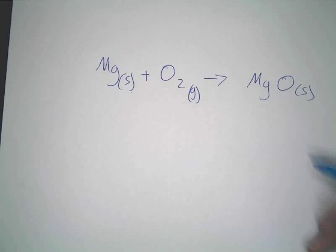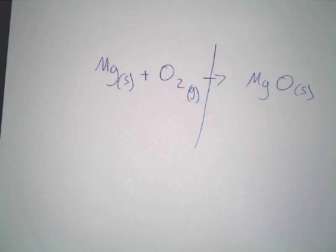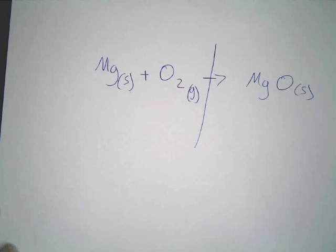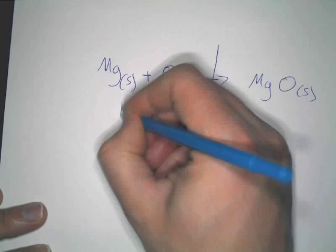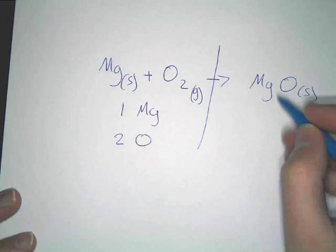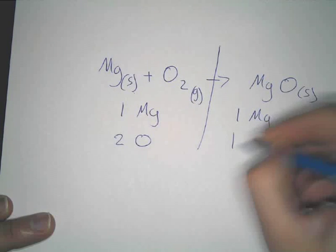The arrow is our dividing line. How many magnesiums do we have on the left side, the reactant side? You have one magnesium, how many oxygens? Two oxygens, alright. Now, on the right side, what's the deal here? One magnesium, one oxygen.